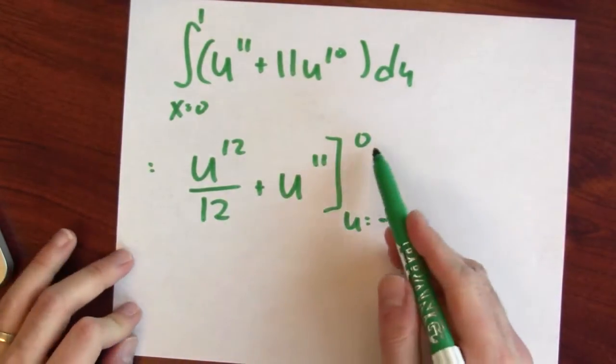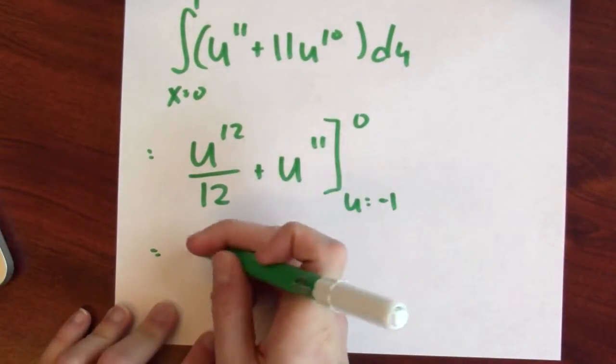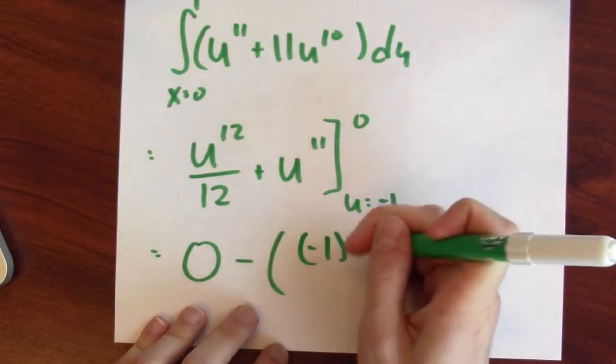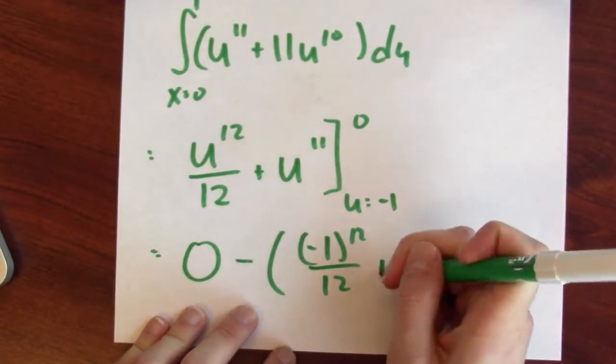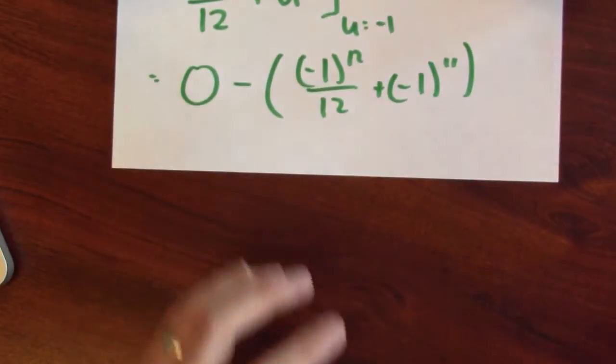And now this is just as easy as plugging in 0, plugging in minus 1 and taking the difference. So what do I get when I plug in 0? I just get 0. And what do I get when I plug in minus 1? Well, I get minus 1 to the 12th over 12 plus minus 1 to the 11th. All right?